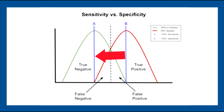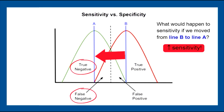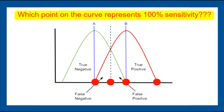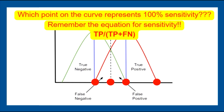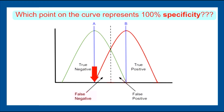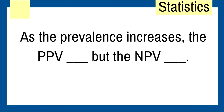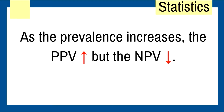What would happen if we moved line B to line A? As false negatives go down, sensitivity goes up. Which point on the curve represents 100% sensitivity? Where false negatives equal zero — that's 100% sensitivity. Which point represents 100% specificity? That's the other specific point on the curve. As prevalence increases, PPV goes up and NPV goes down.